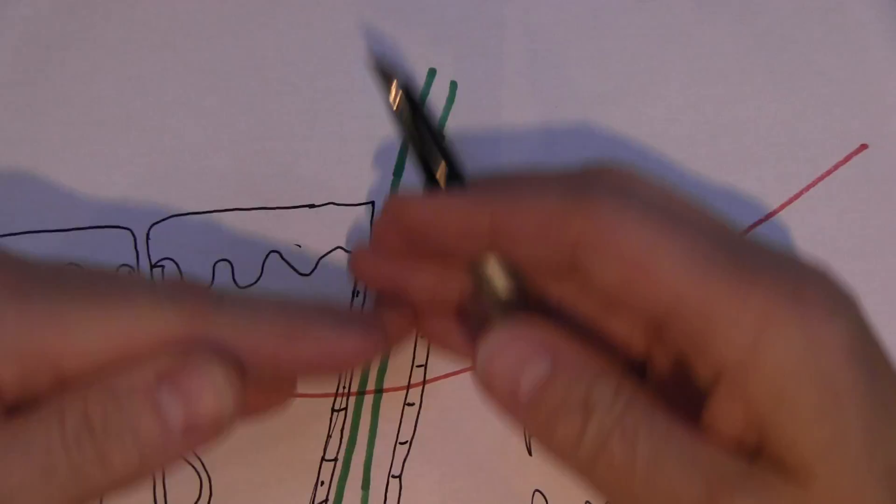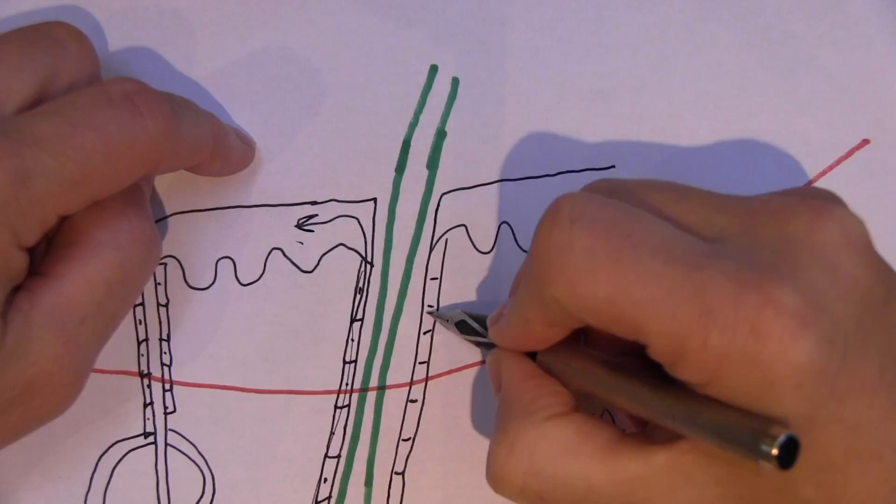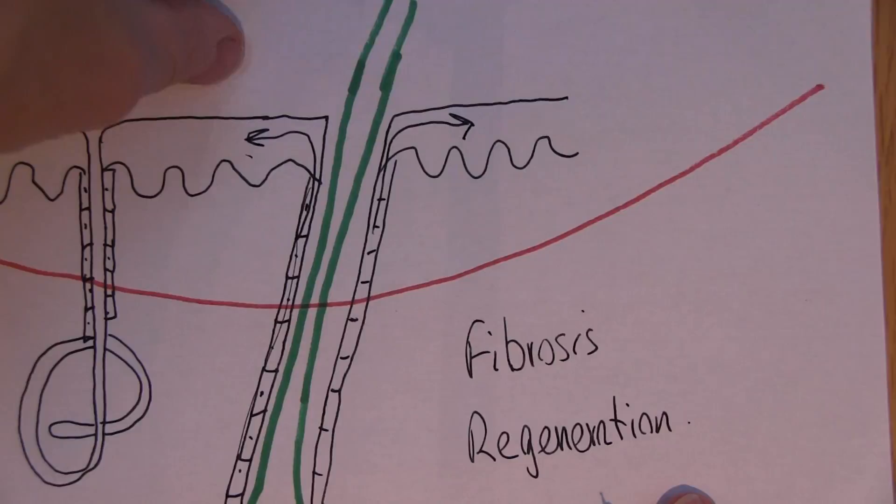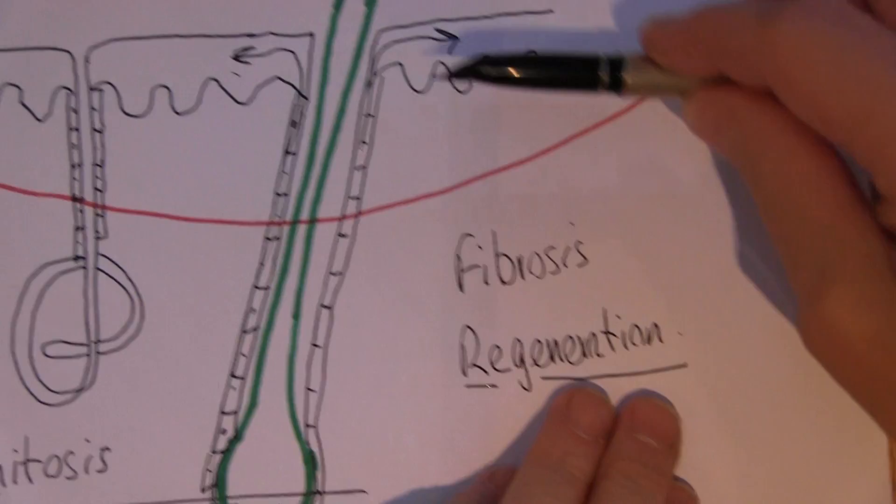So that means we have an epidermis produced by regeneration rather than scar tissue produced by fibrosis. Epidermis. And this means that if these shallow dermal injuries are well managed, we can get regeneration of the epidermis.